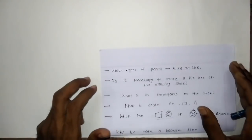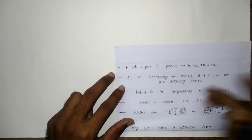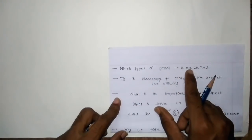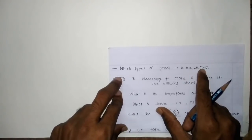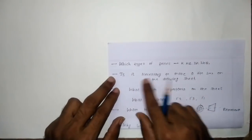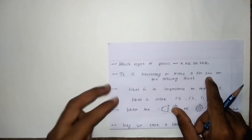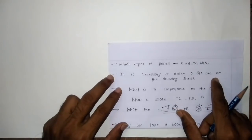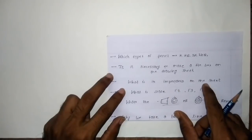Before making the title box, we should know the following parameters: which type of pencil we should use — H, HB, 2H, or 2HB — when we make our title box on the drawing sheet. The next question is whether it is necessary to make a title box on the drawing sheet, and what happens if we do not make a title box. Next is: what is the importance of the title box on the sheet?